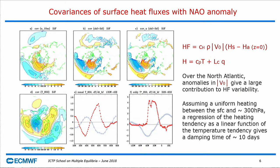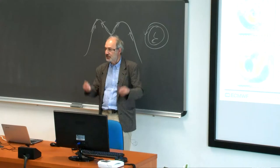It's the variation in wind speed that dominates heat flux variability. The heat fluxes will put heat into the atmosphere. Comparing the temperature anomaly at 850 hPa associated with positive NAO against the heating, these two anomalies are negatively correlated — the red line is the heating produced by these heat fluxes, the blue line is the temperature anomaly. There is a clear anticorrelation: increasing zonal wind increases surface heat fluxes, but these fluxes project negatively onto the NAO anomaly, giving a negative feedback.